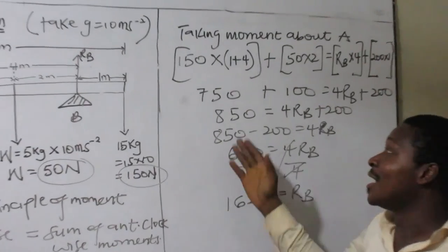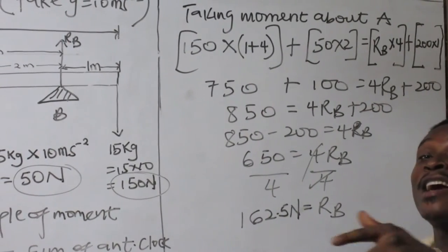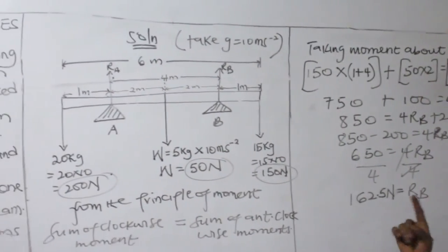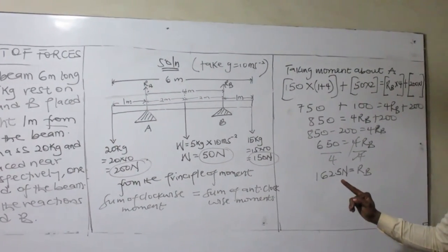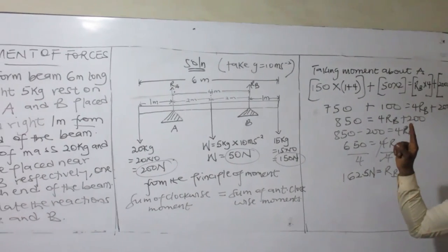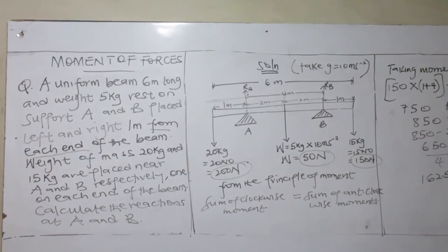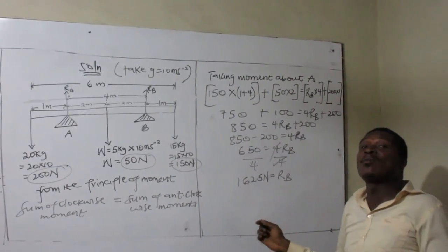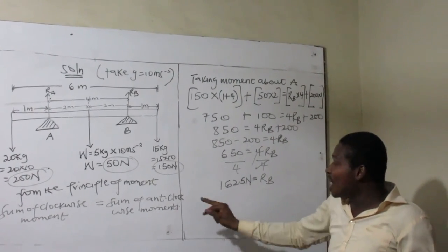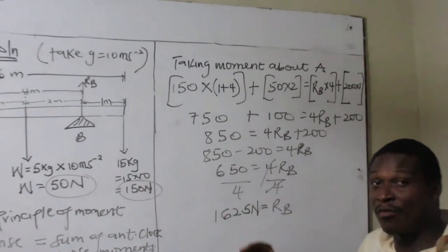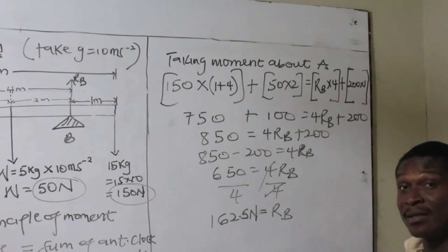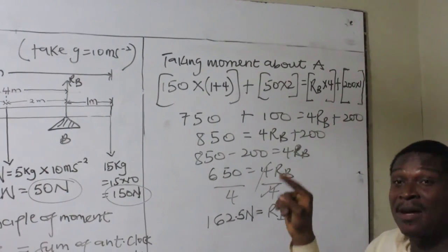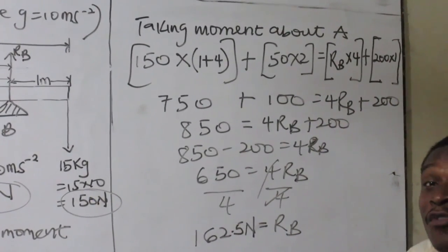We are not done — the question asks to calculate the reactions at A and B, so we now need to find reaction at A. Remember the conditions necessary for forces to be in equilibrium: the sum of the upward forces should equal the sum of the downward forces, and the sum of the clockwise moments should equal the sum of the anti-clockwise moments. We have done condition 2, now we apply condition 1.